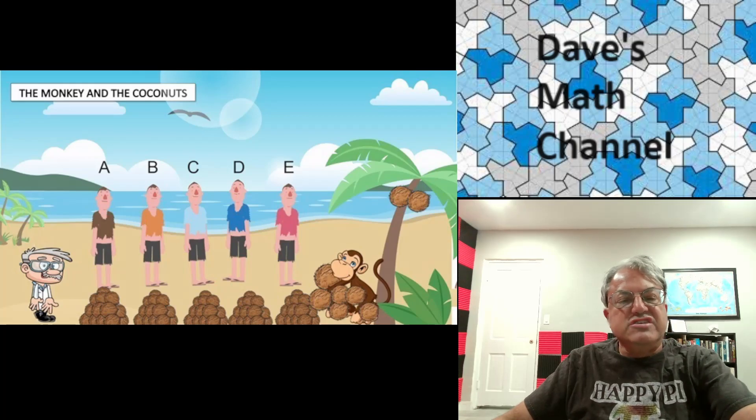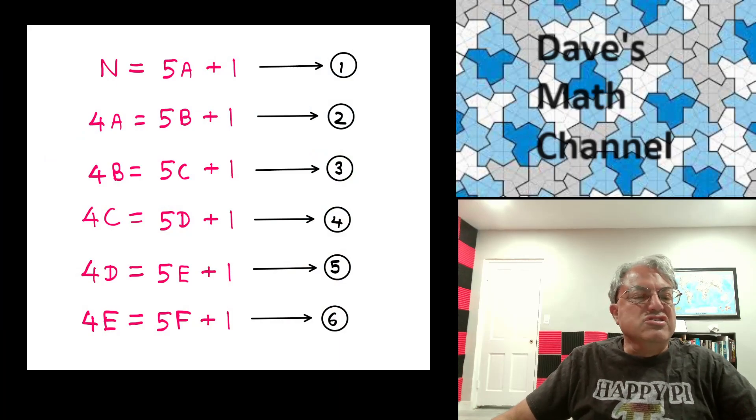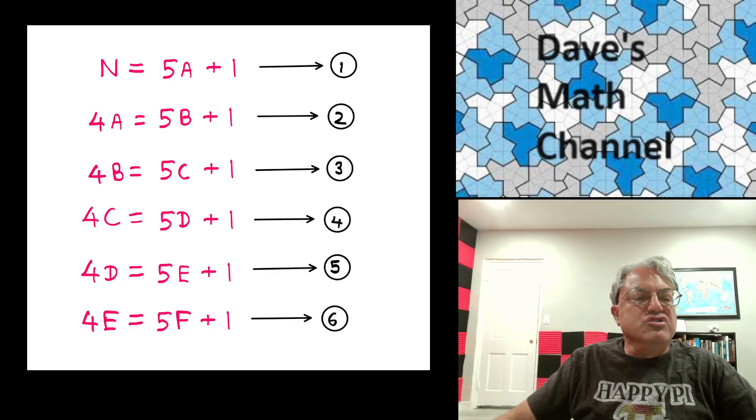So we can set up a bunch of equations to represent what's going on. Since each sailor is taking one-fifth of the total amount of coconuts left, the first sailor A just takes one-fifth of the total. So that's going to be N over 5. But then there's one left. So we have N equals 5A plus 1. That's our first equation. And then it's kind of recursive. So now the number of coconuts that's left after the first sailor does that is 4A.